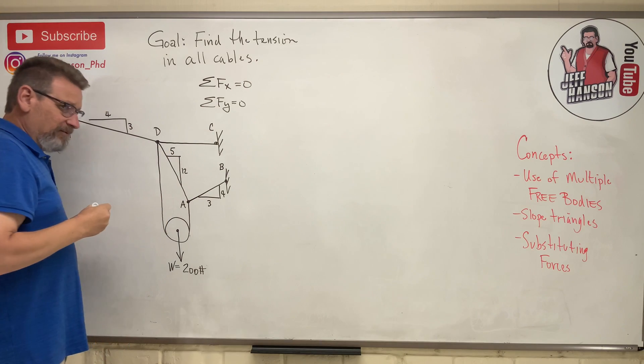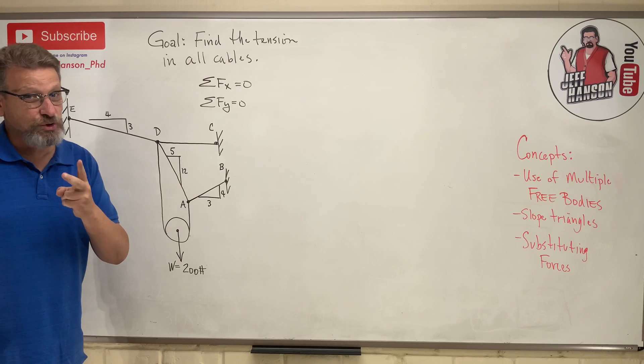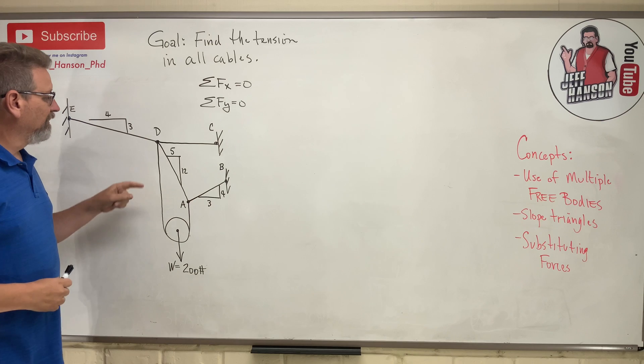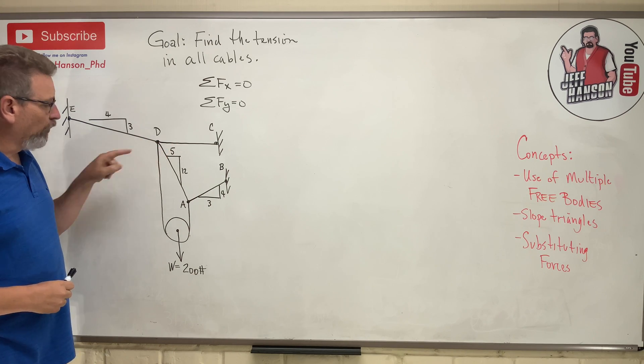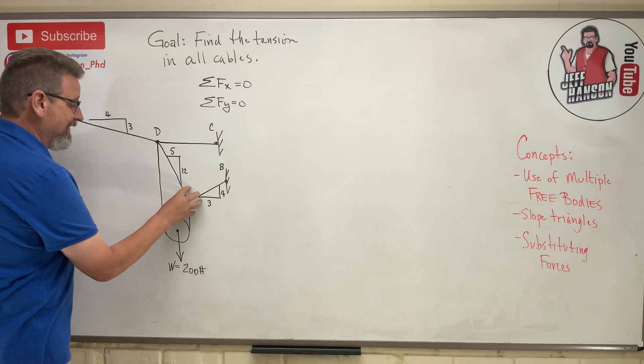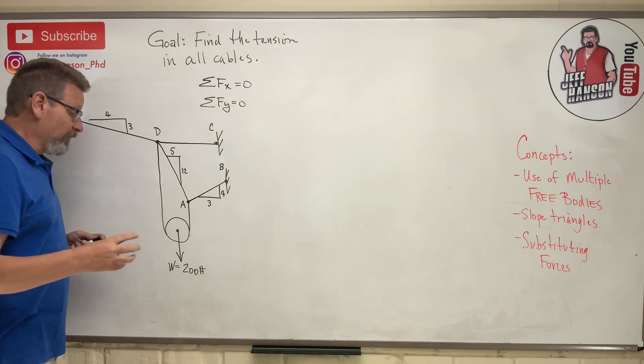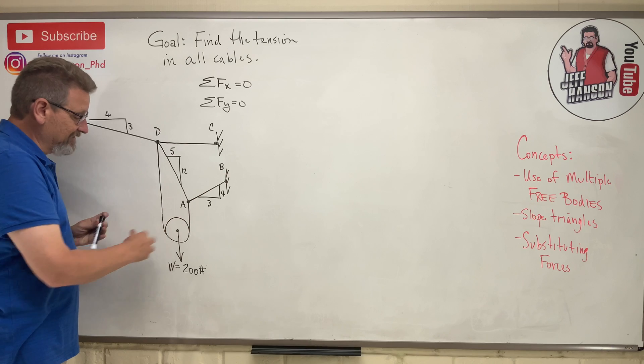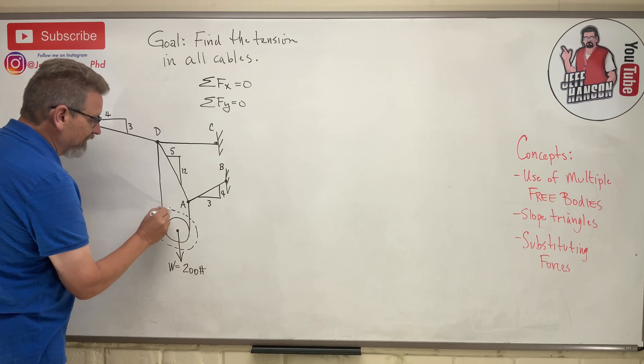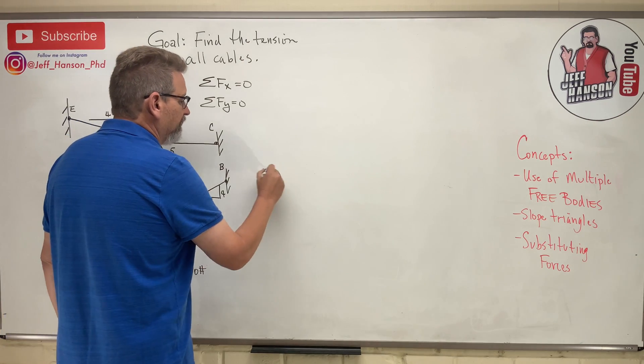So you better not draw a free body diagram of any point on this whole thing that has more than two unknowns. If I started with D, for instance, D's got one, two, three, four cables hooked to it that I don't know the tension of. That's a bad place to start. A has one, two, three cables. That's a bad place to start. So we need to start down here at the one thing that I know, and that is this weight down here. So here's my free body diagram cookie cutter. I am going to examine what's going on with that pulley right there.